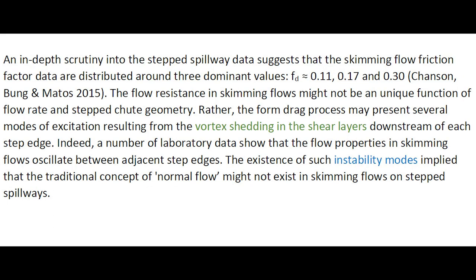An in-depth scrutiny of the step spillway flow resistance data suggests that the skimming flow friction factor data are distributed on three dominant values. The flow resistance may not be a unique function of the flow rate and step geometry. Rather, the form drag process may present several modes of excitation, resulting from vortex shedding in the shear layer downstream of each step edge. Indeed, a number of laboratory data show that the flow properties in skimming flows oscillate between adjacent step edges. The existence of such instability modes implies that the traditional concept of normal flow might not exist in skimming flow on step spillways.